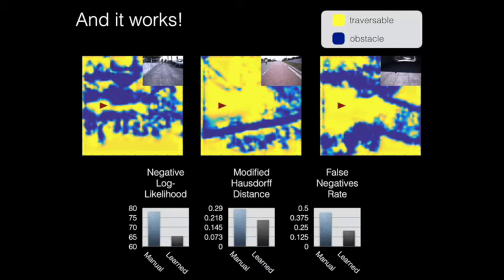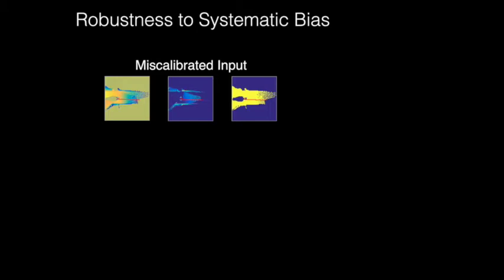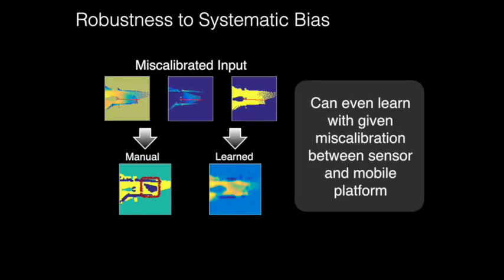Additionally, we improve significantly in the evaluation metrics, regarding prediction of human trajectories, as well as the classification of traversable terrain. A huge bonus of learning the cost function is that we achieve robustness towards systematic bias. While the manual cost function results in artificial obstacles when we introduce a miscalibration into our system, the learned model is able to associate the new features during training with traversable and untraversable terrain.